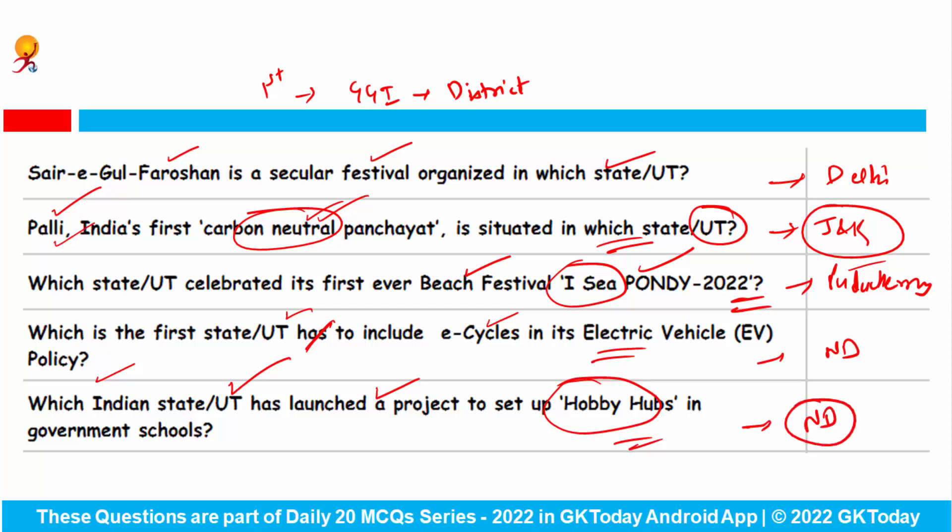Which Indian state or union territory has launched a project to set up hobby hubs in government schools? This is New Delhi, and the aim is to use the infrastructure of government schools properly and to promote extracurricular activities among students.